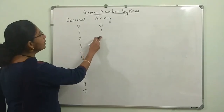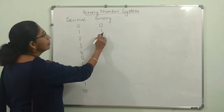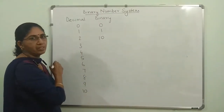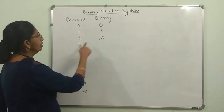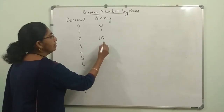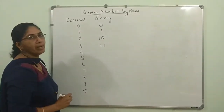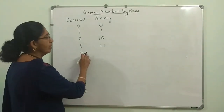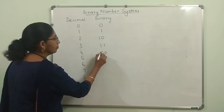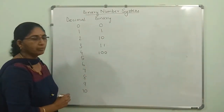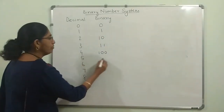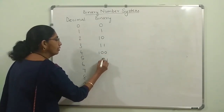Similarly, for binary number two: in the first place zero comes and in the second place one comes — so 10 is binary two. For three, adding one gives 11 — that is binary three. For binary four, adding one more: one plus one gives zero and carry one, so 100 is binary four — the place is shifting just like in decimal. For five, adding one: 101 is binary five.